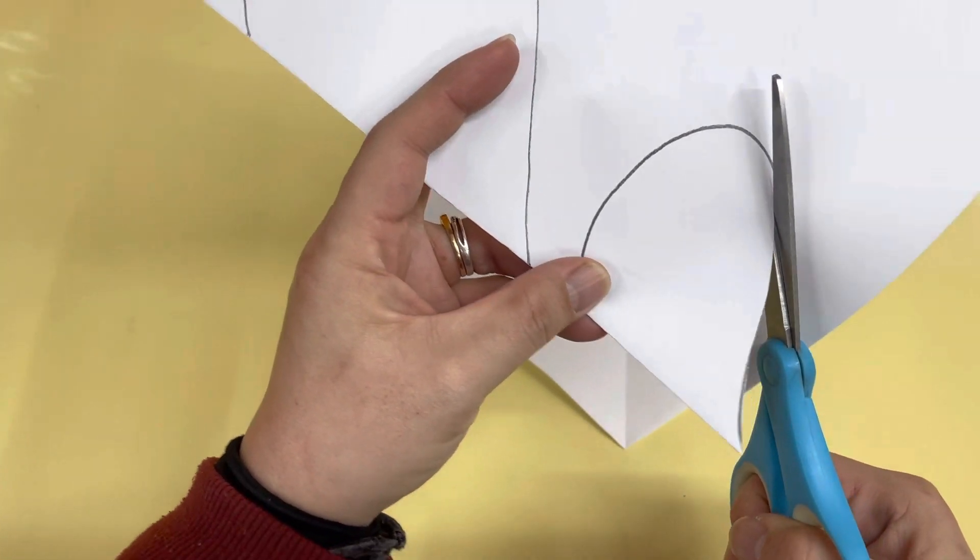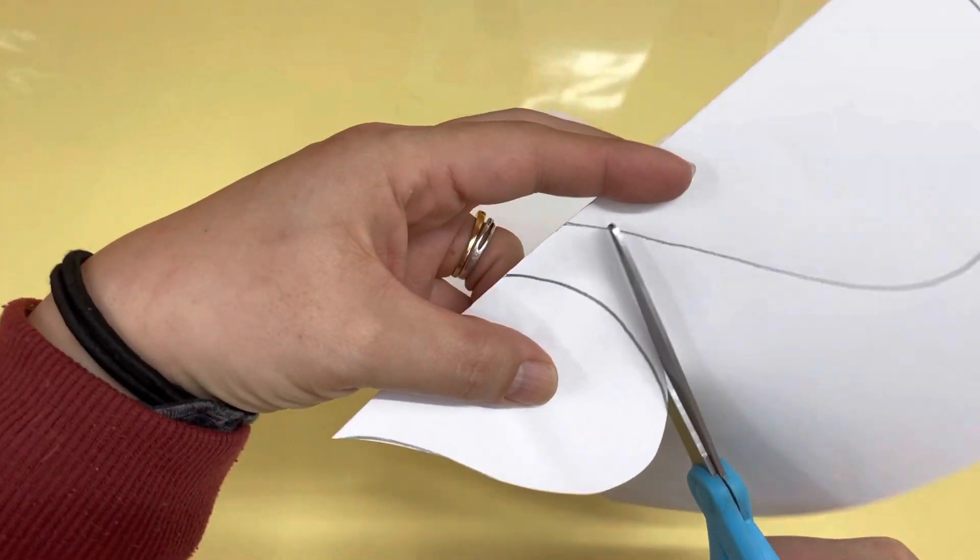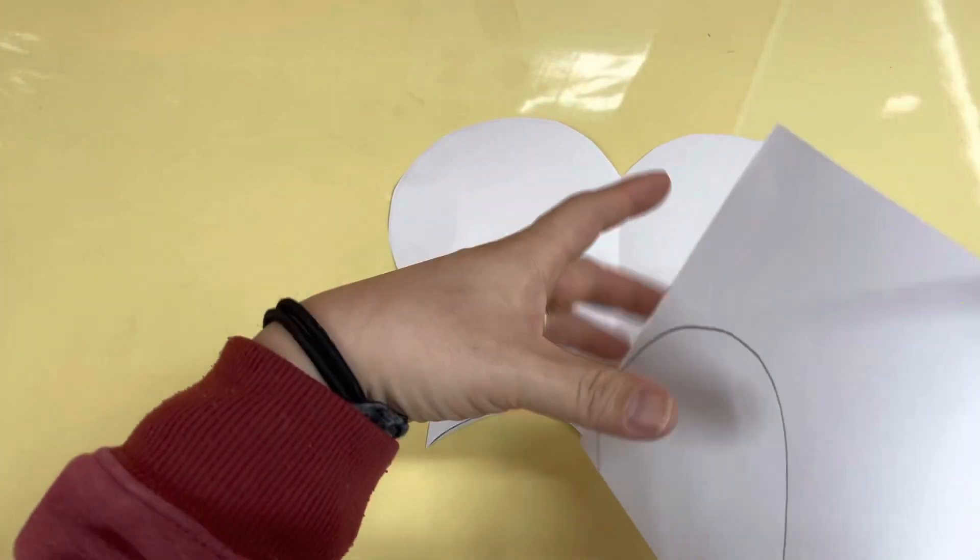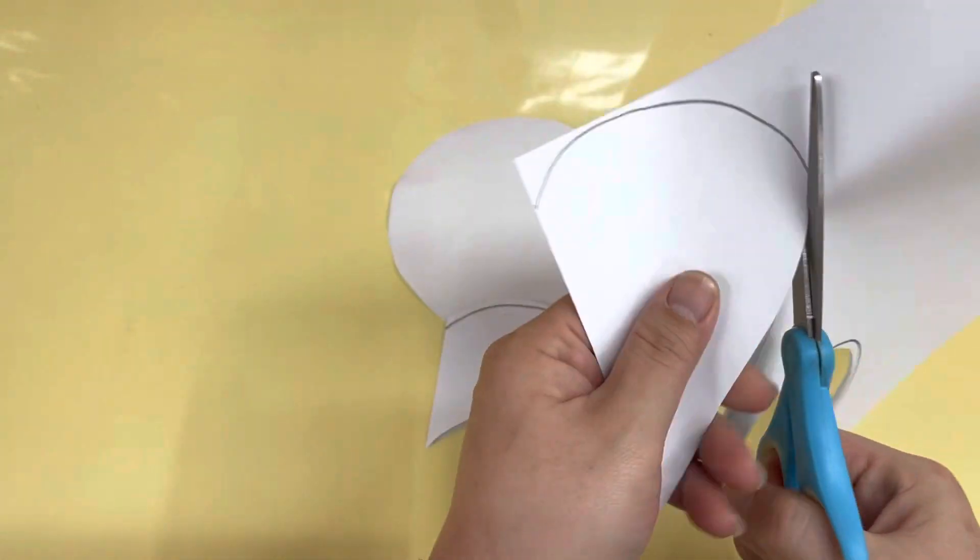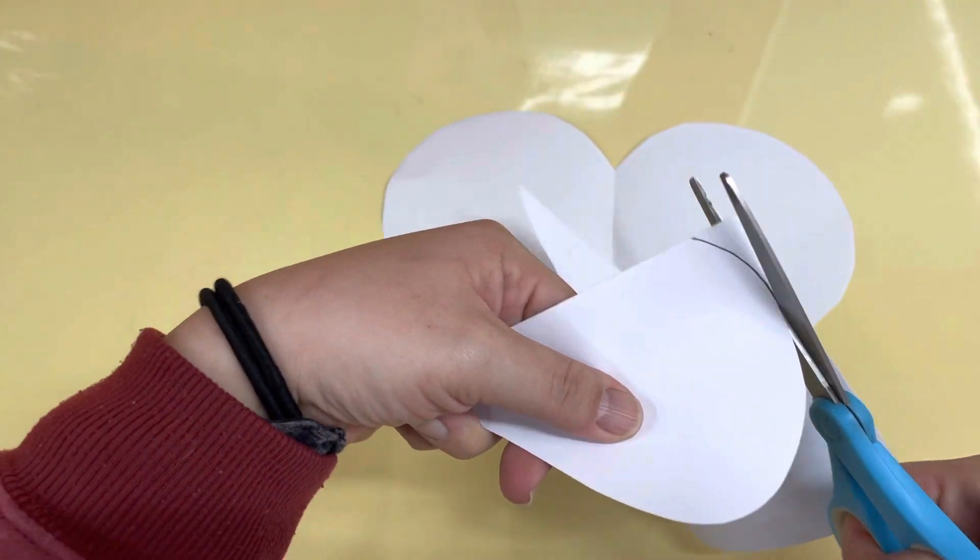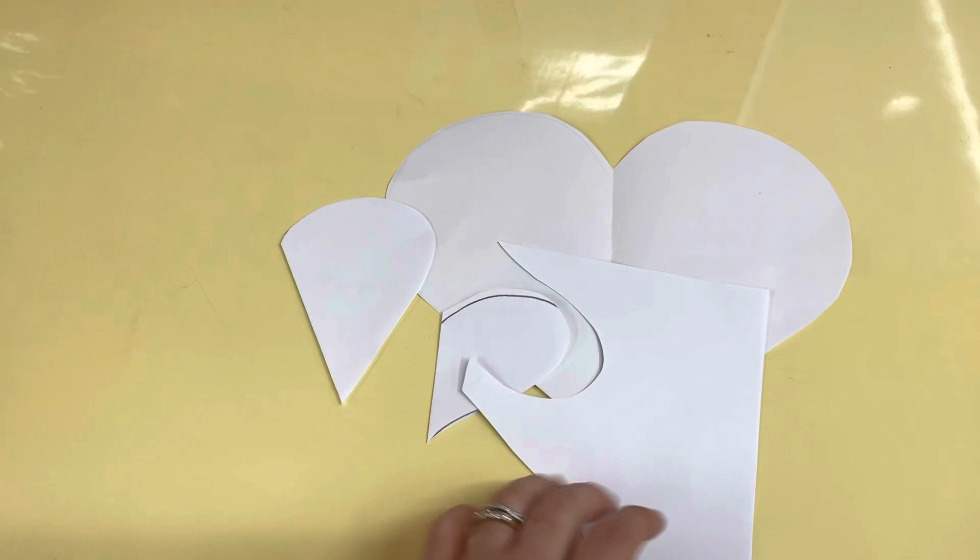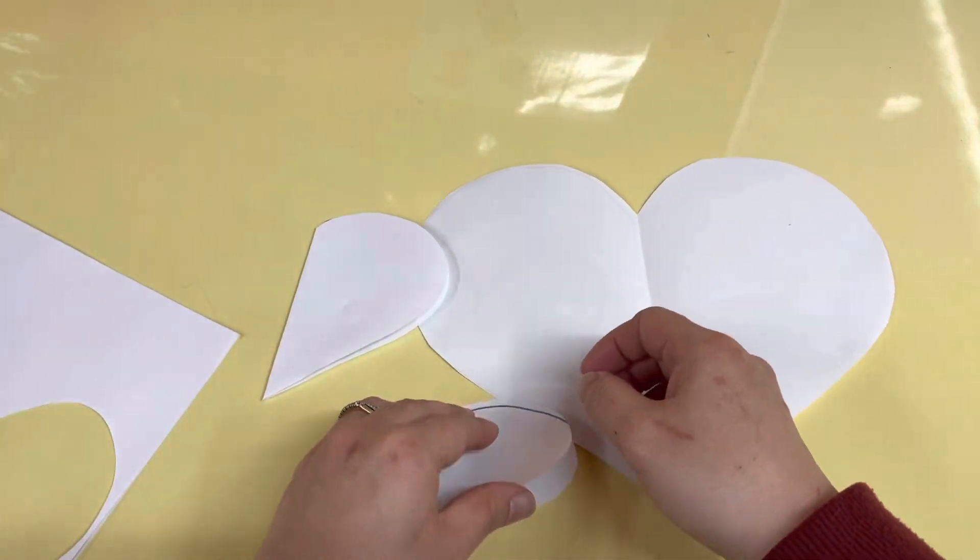And then cut the smaller hearts. So now you have how many hearts do you have now? You have three hearts, there you go. And now you open. Wow, wow!